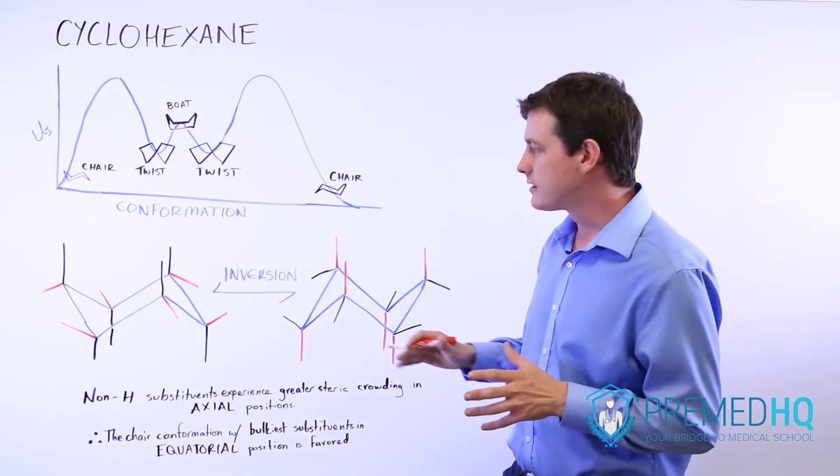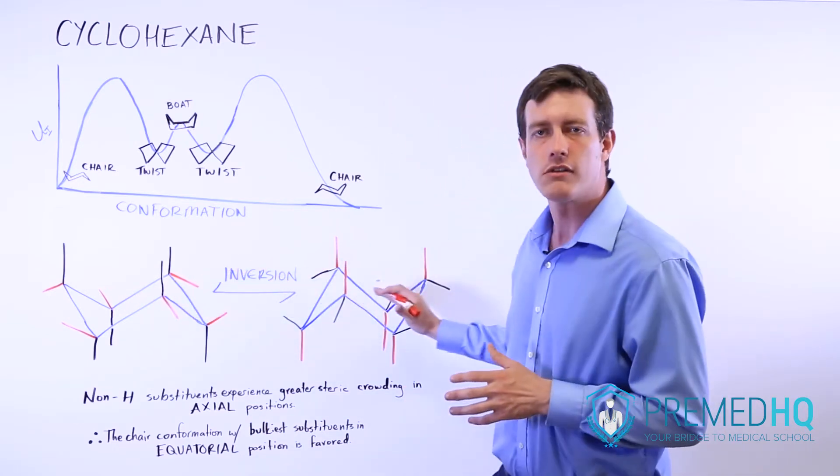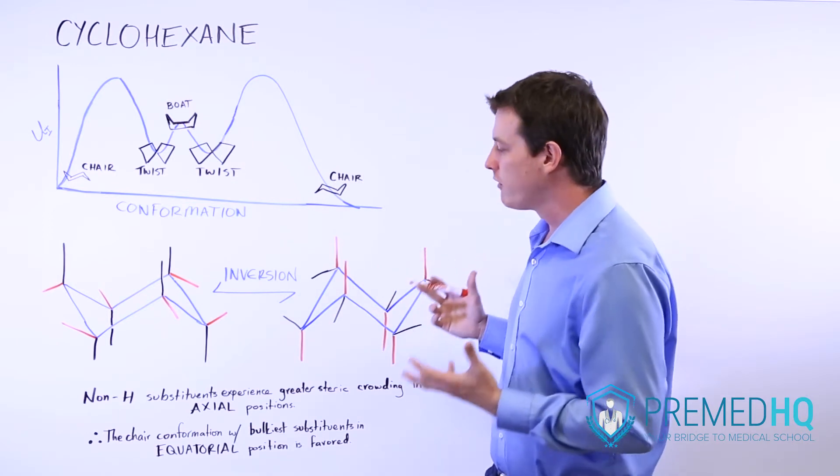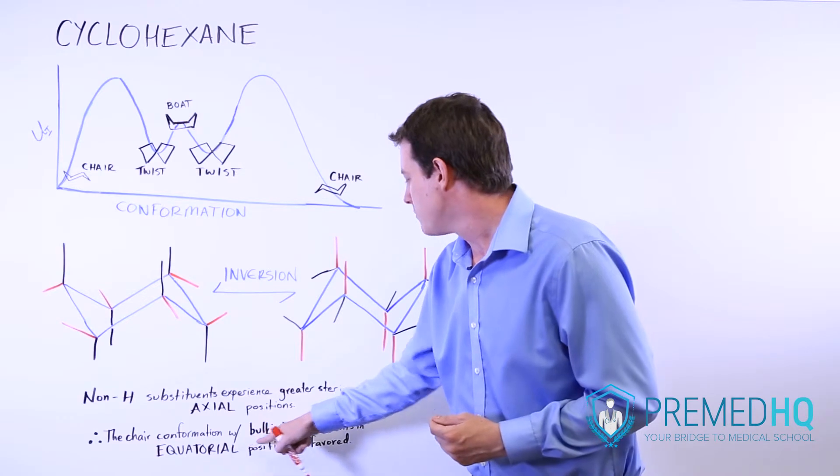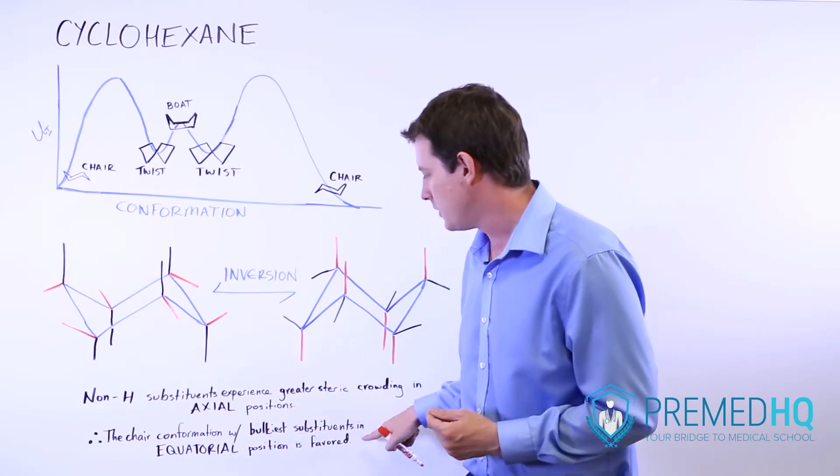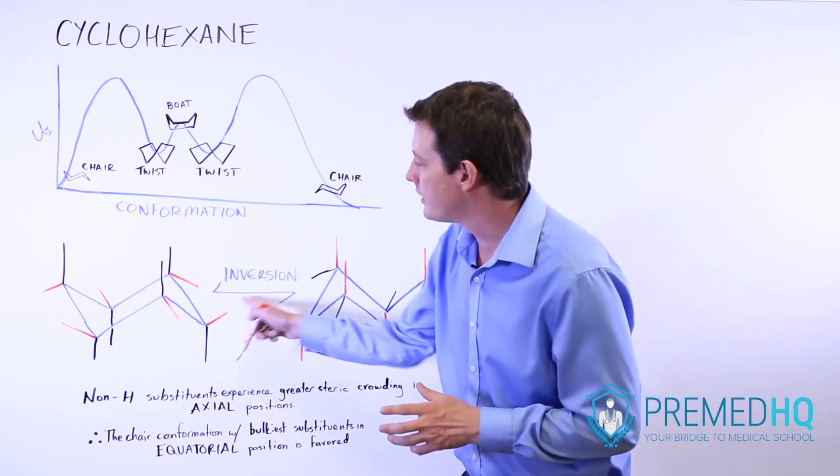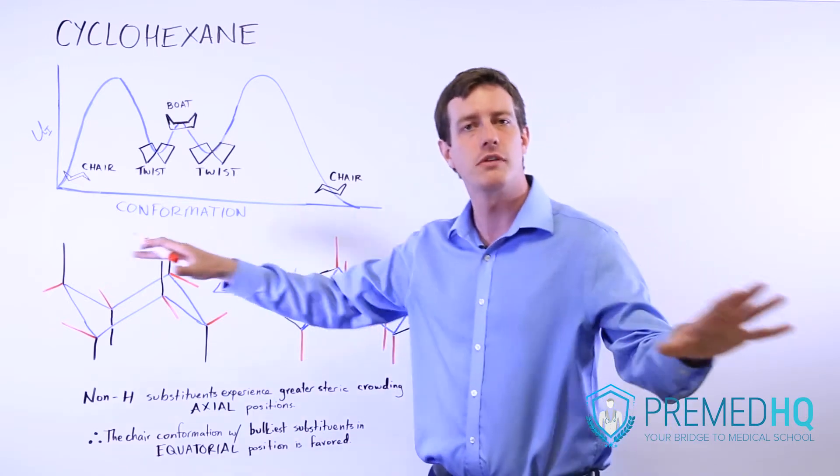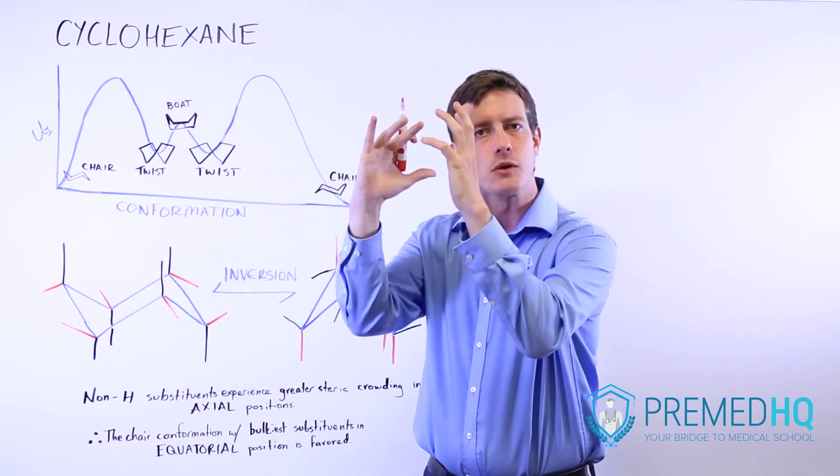And what this means is that when it's choosing between which of these two inverted chair conformations that it will most likely exist in, it's far more favorable to find the chair conformation which has as many of its bulkiest substituents in the equatorial position, because those ones are far less likely to encounter each other because there's greater distance and they're facing out from the center rather than just going straight up and possibly interacting with each other.